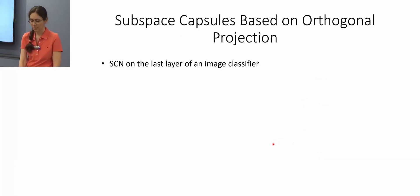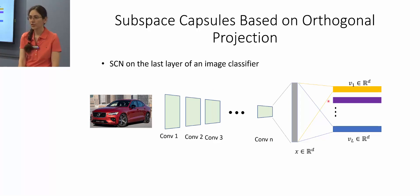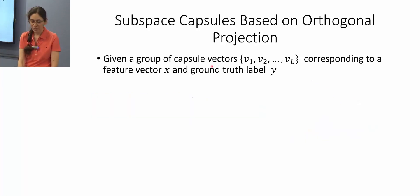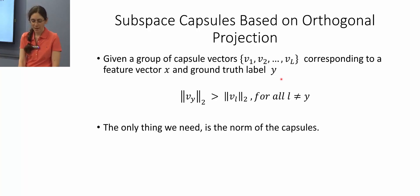Creating subspace capsules based on orthogonal projection works fine for a limited scenario — for instance, if we apply SCN on the last layer of an image classifier. At the top level we have different capsule types for each output class, and we train the model such that for a given input x and corresponding ground truth label y, the capsule corresponding to the target class is larger than all other capsules. The only thing we need is the norm of the capsules.